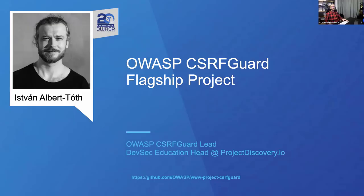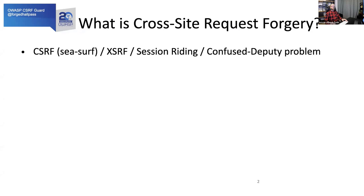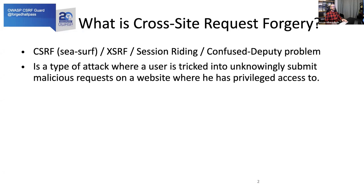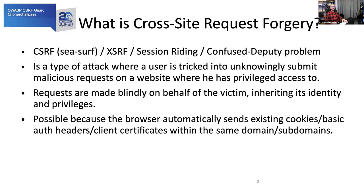I'm going to talk about cross-site request forgery attacks today, mostly about the CSRF Guard project. Since many people have trouble understanding all the corner cases and scenarios that a CSRF attack might involve, I'll start with the basics. A cross-site request forgery — also known as CSRF, XSRF, session riding, or the confused deputy problem — is a type of attack where a user is tricked into unknowingly submitting a malicious request on a website where they have privileged access. The requests are made blindly on behalf of the victim, inheriting their identity and privileges.